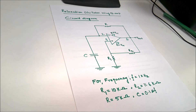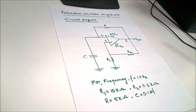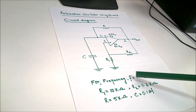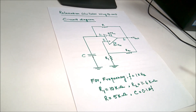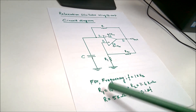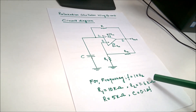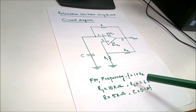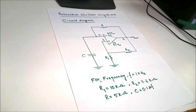This is a relaxation oscillator using an operational amplifier. Here is the circuit diagram, and we are going to design the circuit for a frequency of 1 kilohertz at the output. After the design, we got R1 equal to 10 kilohms, R2 equal to 11.6 kilohms, R equal to 5 kilohms, and capacitance of 0.1 microfarad.